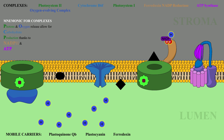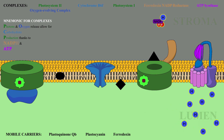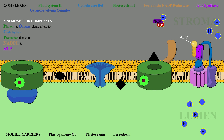Note that this also contributes to the proton gradient by removing a proton from the stroma. So now we come to ATP synthase — this is where the plant uses the proton gradient it's been building. The protons now desperately want to diffuse from the lumen into the stroma, and ATP synthase uses them to power the production of the high energy molecule ATP. For every three protons that pass through ATP synthase, one molecule of ADP is combined with inorganic phosphate to create ATP.